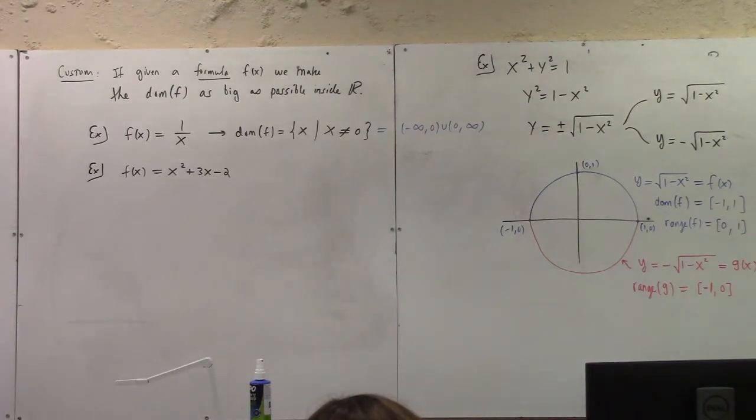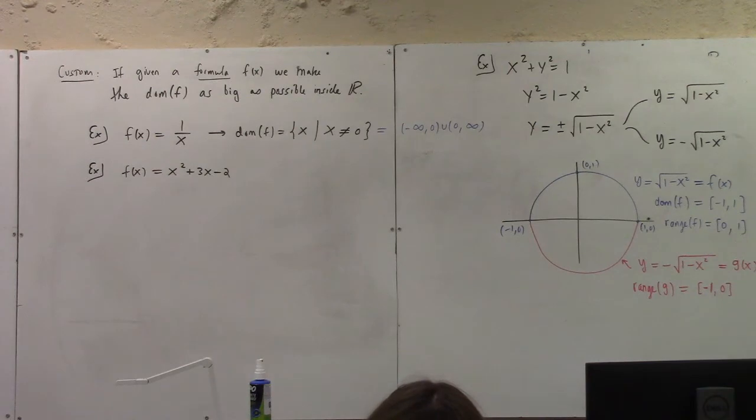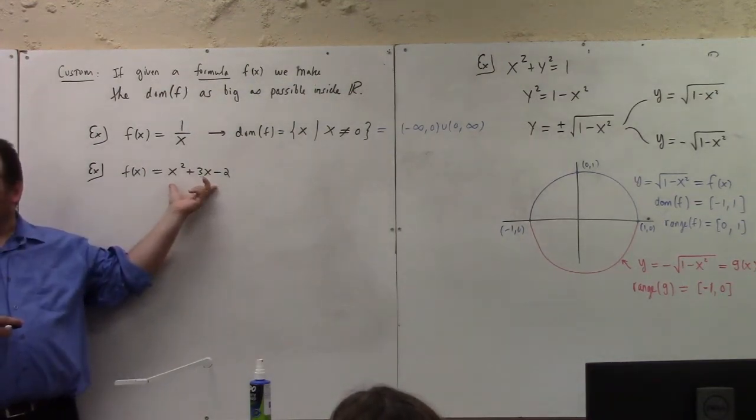How about the next one? The next one is an example of what's called a quadratic polynomial function, because its formula is given by a quadratic polynomial. Which x does that formula make sense for? What real numbers can you square, multiply by 3, and subtract 2 from? Which real numbers can we do this sequence of arithmetic on?